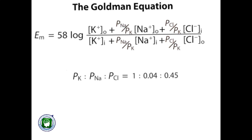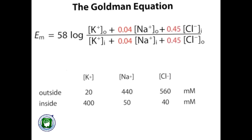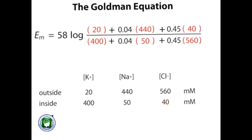Substituting the values, we get the final form of the equation. From the chart of extracellular and intracellular fluid of a squid's giant axon, which Hodgkin worked on, the equation can be solved to give a result of minus 62 millivolt, which is much closer to the experimental value of minus 65 millivolt.